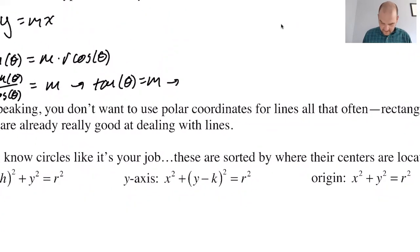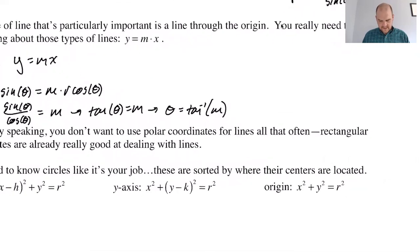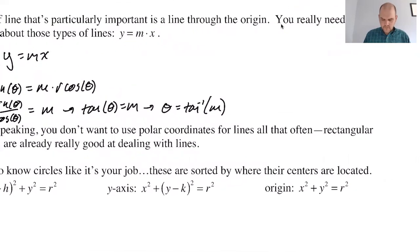And then I can divide both sides by cosine. So sine over cosine, we'll get sin(θ)/cos(θ) is equal to m, which means tan(θ) = m, which is not really where we want to stop. Where we want to stop is we want to find out theta. You should solve for the variable. The variable is theta. It's the independent variable. It's kind of interesting. Theta is tan inverse of m. So why on earth is this an important thing?